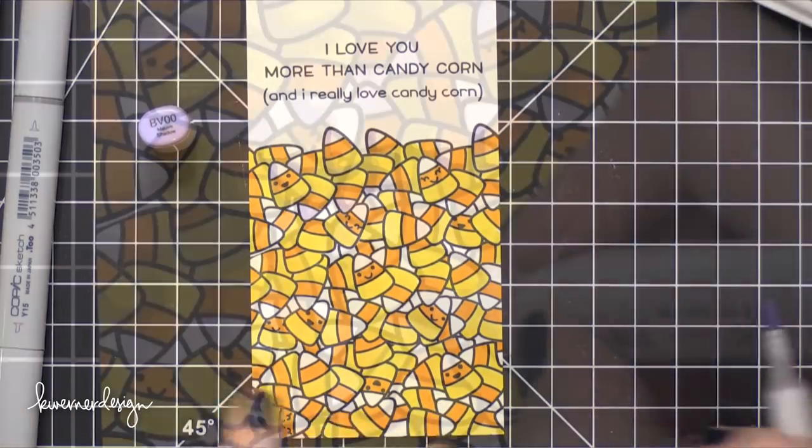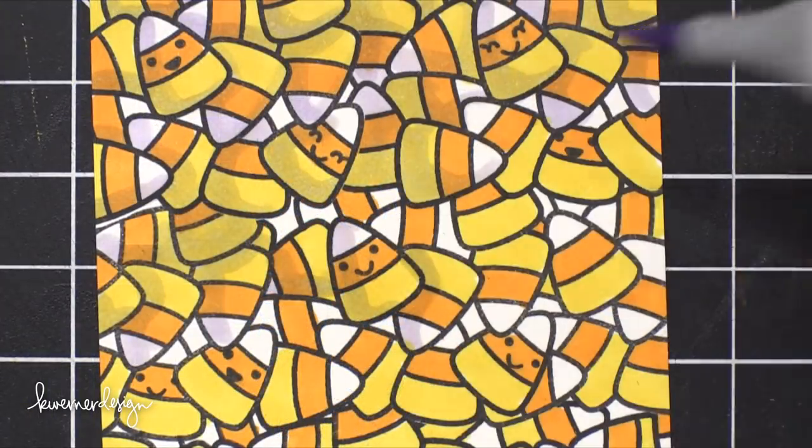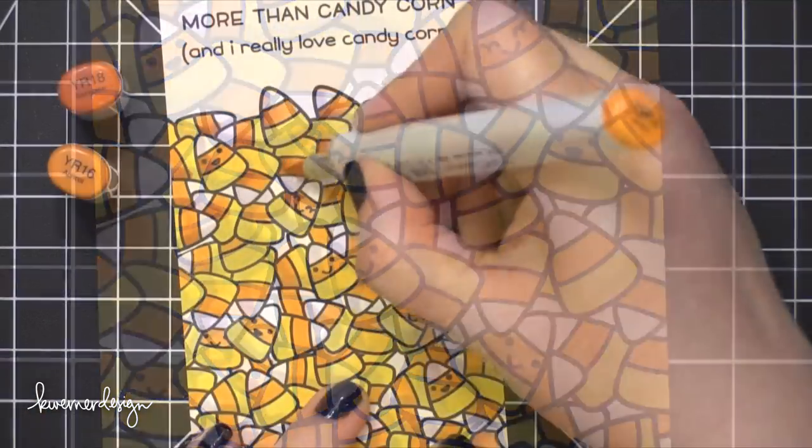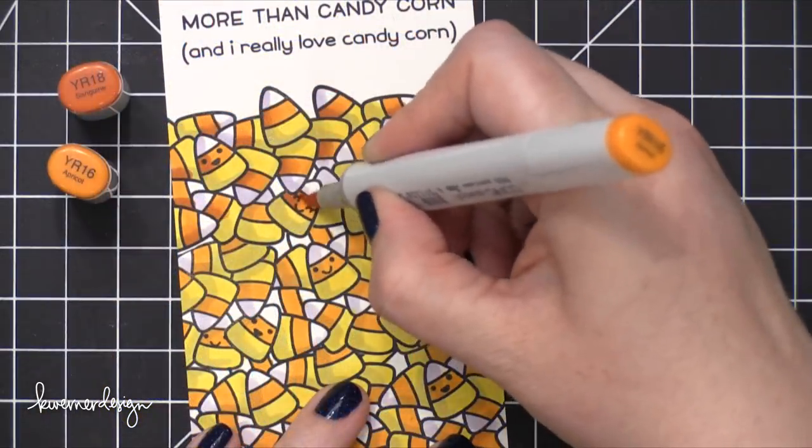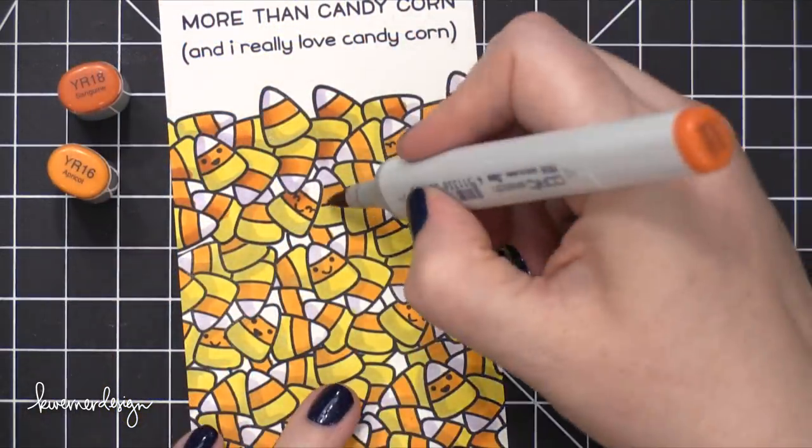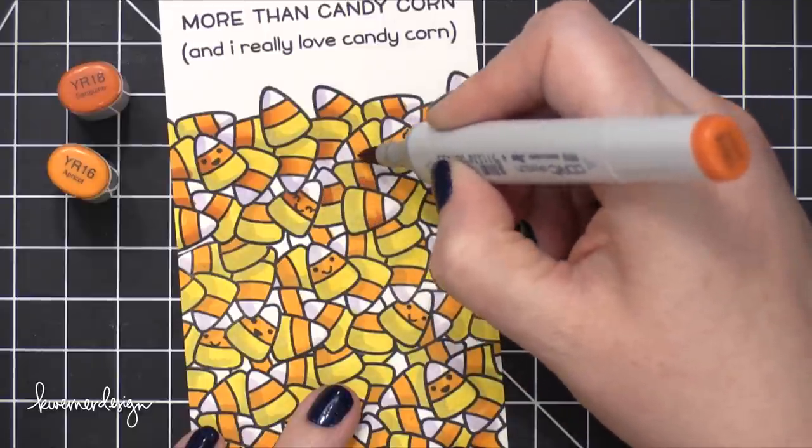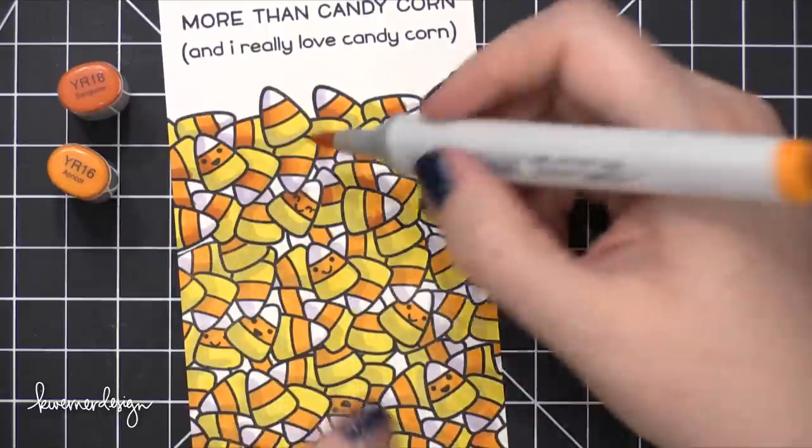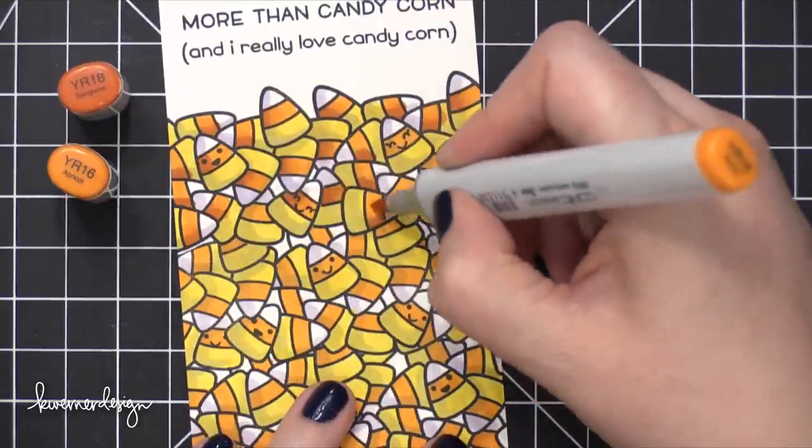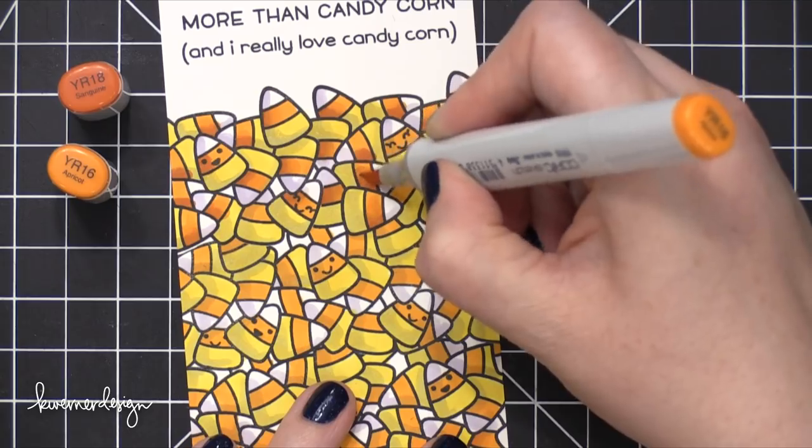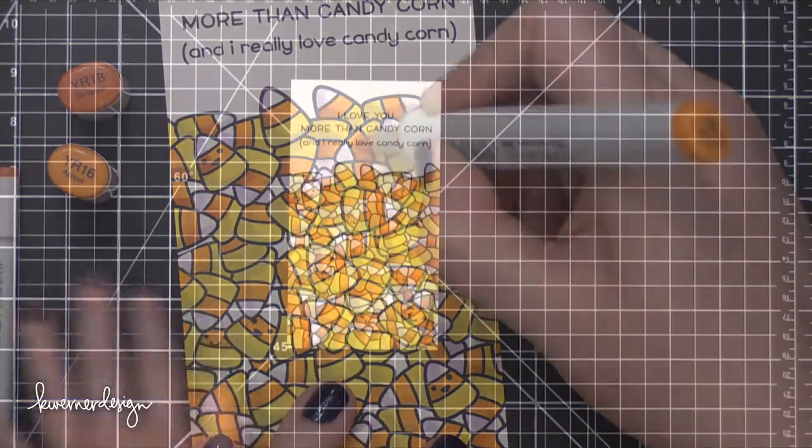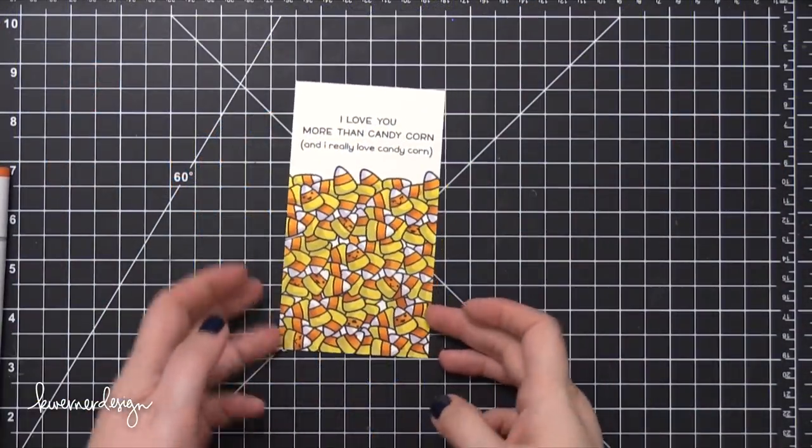And so I did do that. I added a bunch of shading and it gave it just a little bit of dimension. And then I realized I just really wanted a more vibrant orange. So I did bring in another orange color, just a darker shade, which is YR18. And I used YR16 to kind of fade it out just a little bit. And by bringing in that darker shade, it really brought the image to life, I think.